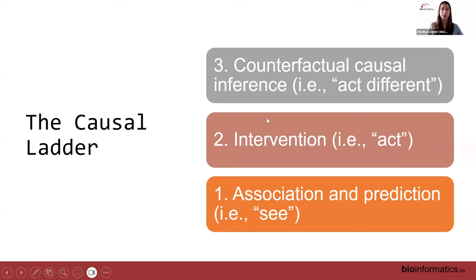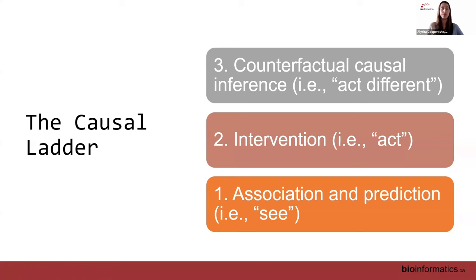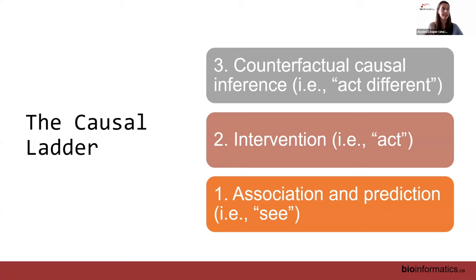The next step up on the causal ladder is intervention — that's when we act on the variables, as in experimental designs. Here I can ask 'if I change X by this much, how much does Y change?' — and then I can actually make that causal jump. At the very top of the ladder is 'act different': even if assigning a treatment gave a positive outcome, would they have had the same outcome without it? Is X actually the reason Y changed?